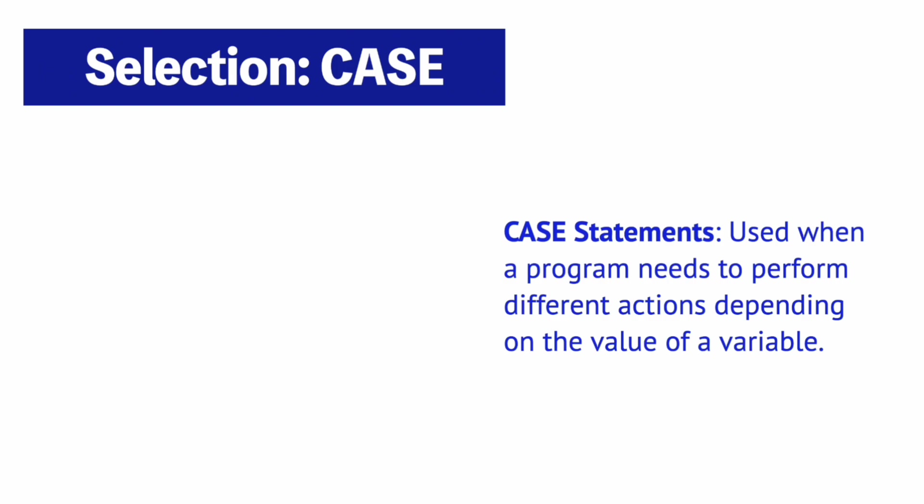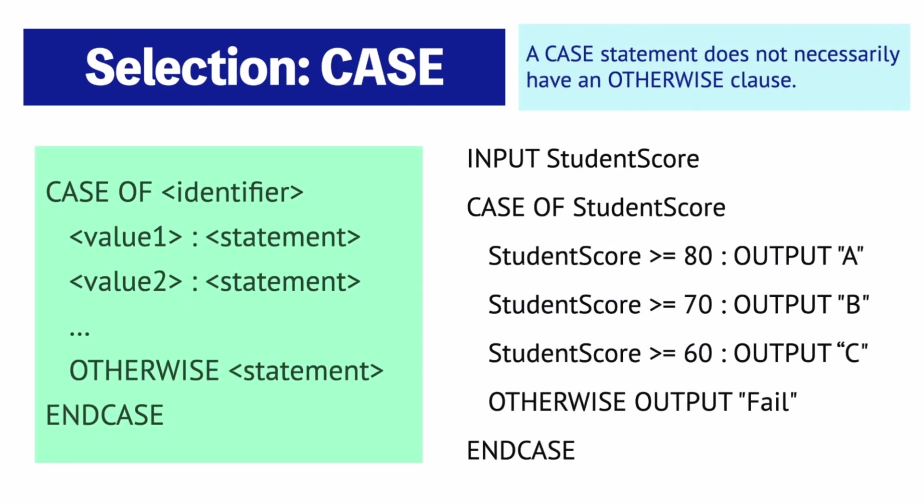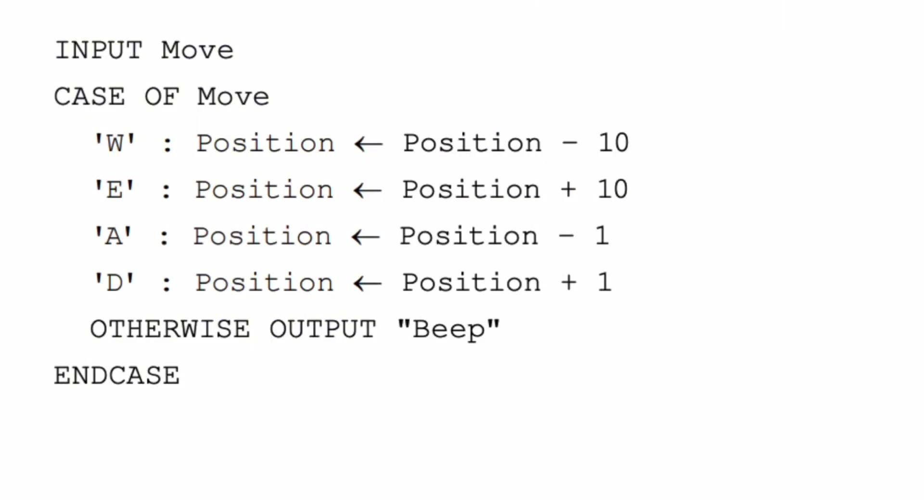The other type of selection statements is CASE statements which are used when the program needs to perform different actions depending on the value of a variable. Here's the structure of a CASE statement and an example. Basically the program will look at the value of a variable and check it against these possible cases. It goes through the cases one at a time until it finds the matching case. If there's a match the program will execute the statement corresponding to that case. But if there were no matches then it moves to the OTHERWISE clause. And again an OTHERWISE clause is not necessary to include if there's no need for it. So if there's no OTHERWISE clause it'll just jump to the ENDCASE. Here's another example of a CASE statement.